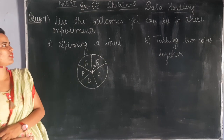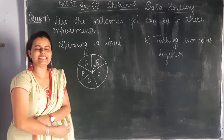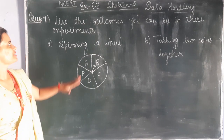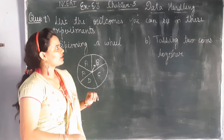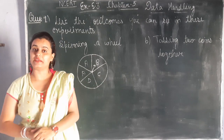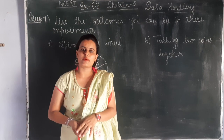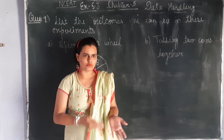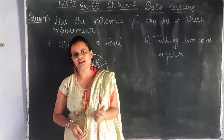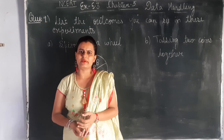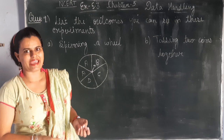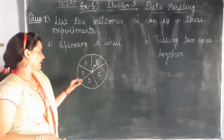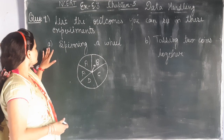Hello students, welcome to our old classes mathematics. Now we start question first of Exercise 5.3. This question says to list the outcomes you can see in these experiments. This chapter is about chances and probability and outcomes. In our previous classes you studied about probability, and we will learn a little bit more — it is exactly the same.